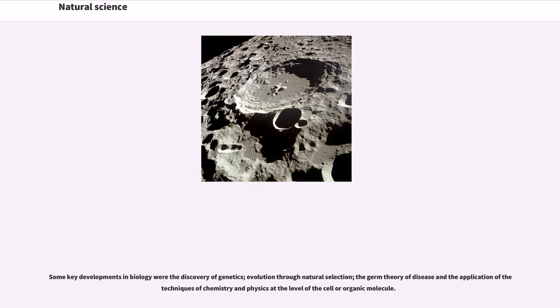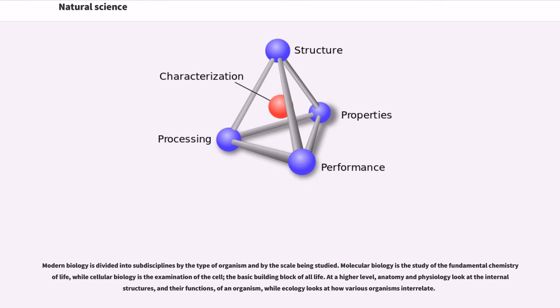Some key developments in biology were the discovery of genetics, evolution through natural selection, the germ theory of disease and the application of the techniques of chemistry and physics at the level of the cell or organic molecule. Modern biology is divided into sub-disciplines by the type of organism and by the scale being studied. Molecular biology is the study of the fundamental chemistry of life, while cellular biology is the examination of the cell, the basic building block of all life. Anatomy and physiology look at the internal structures and their functions of an organism, while ecology looks at how various organisms interrelate.